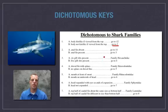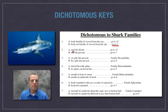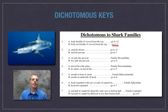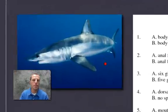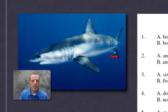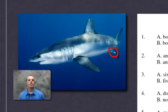Coming down to number two, we ask: is the anal fin present or absent? If we zoom in on the shark, we can see it does have an anal fin right there. So the anal fin is present, which tells us to go to number three.